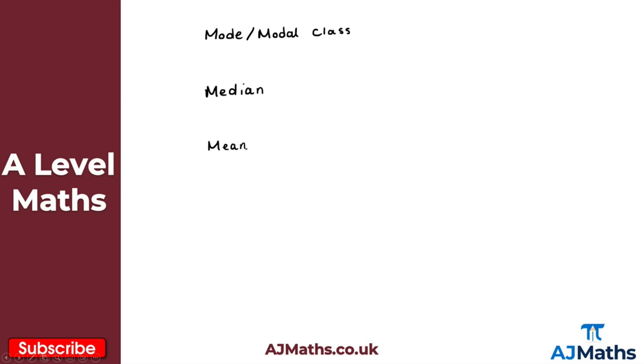The mode or modal class is the value or class that occurs most often. The median is the middle value when the data is ordered, and the mean is the sum of the data divided by the total sample size.